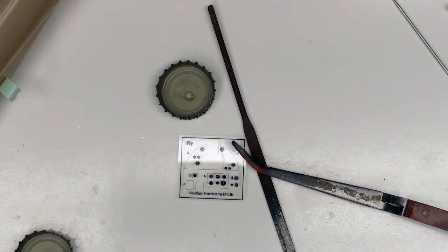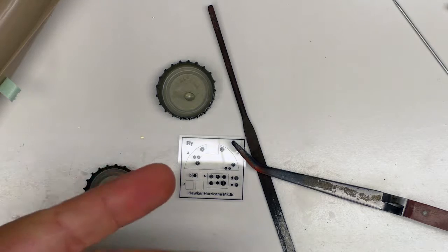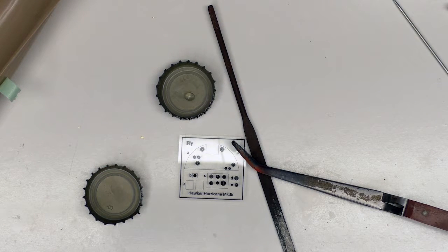So I said early on this build is going to be without paint and that the kit would have to stand on its own. But with acetate gauges it's critical to put some sort of backing color on them.